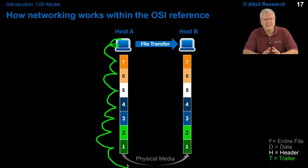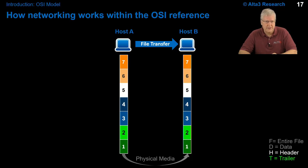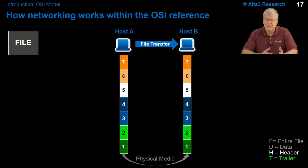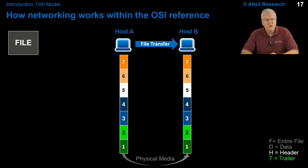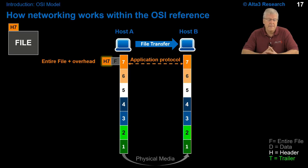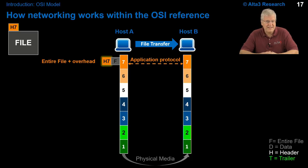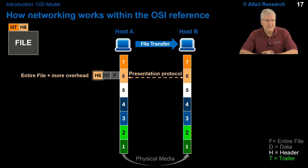Each layer has a specific thing to do. Starting with a file, in this example we'll use a TCP session to move that file from Host A to Host B. The file is passed down to layer 7 as an intact file — that is the service data unit — and layer 7 overhead is added. That overhead will make sense when it arrives at layer 7 on the other side. Then it's passed down to layer 6.